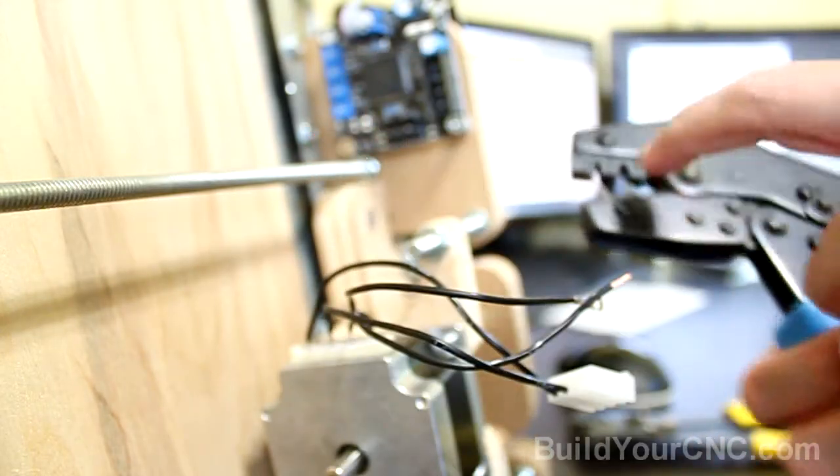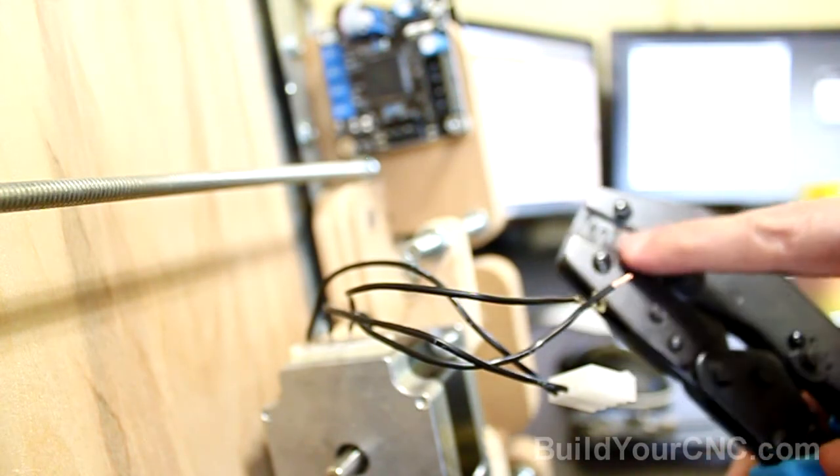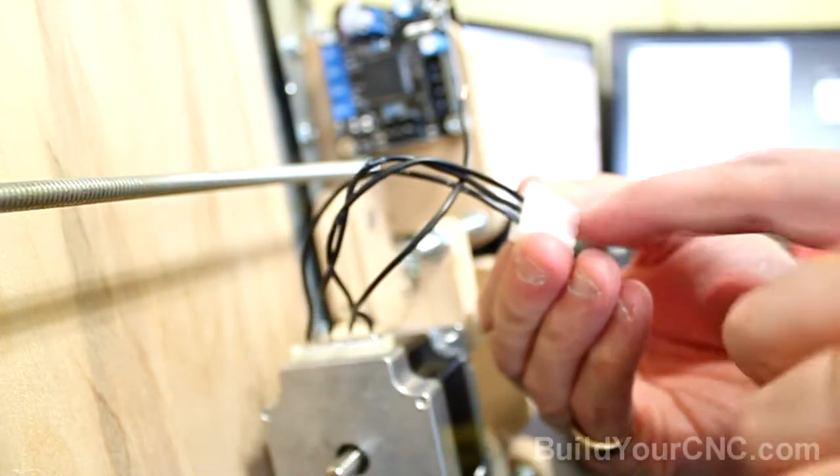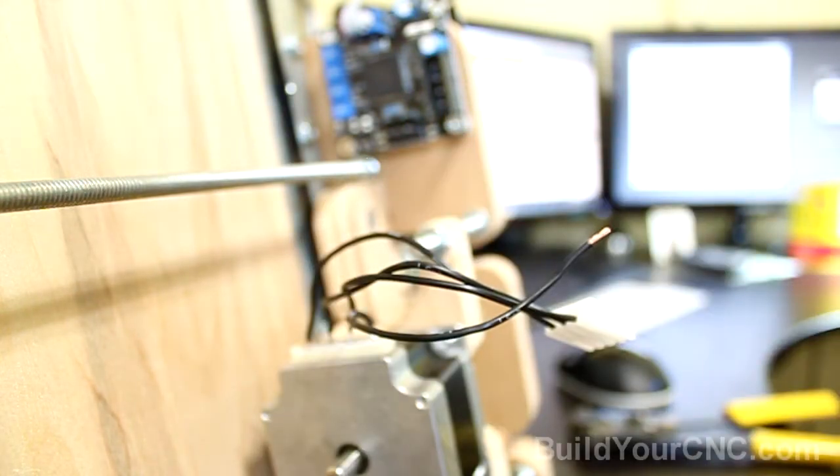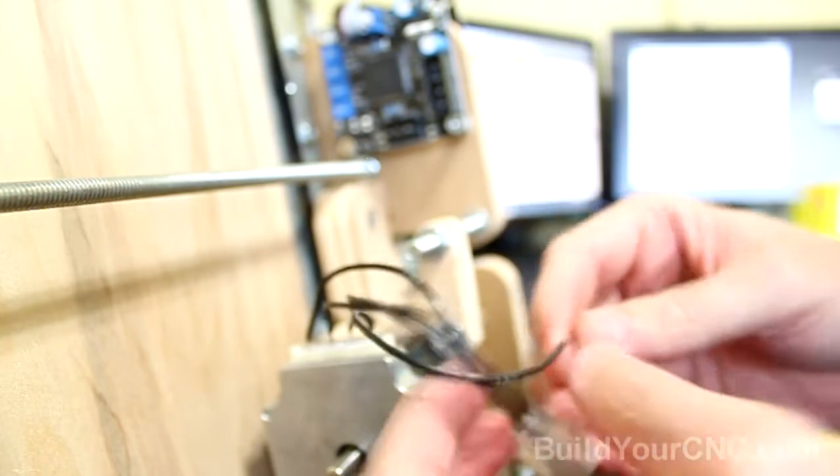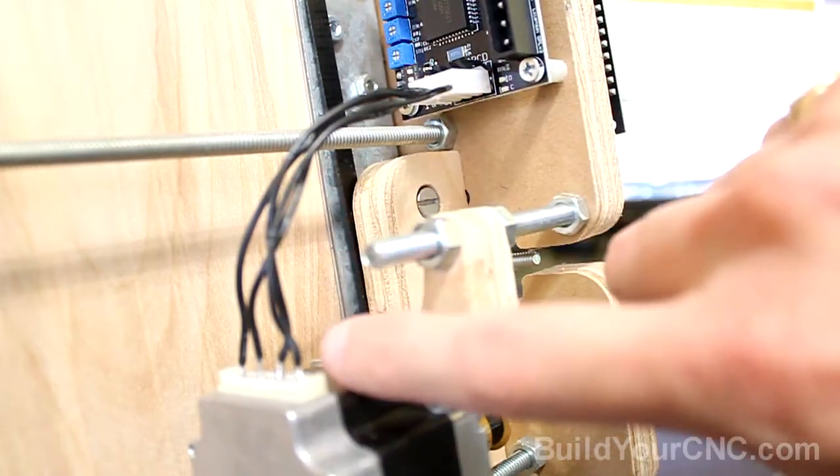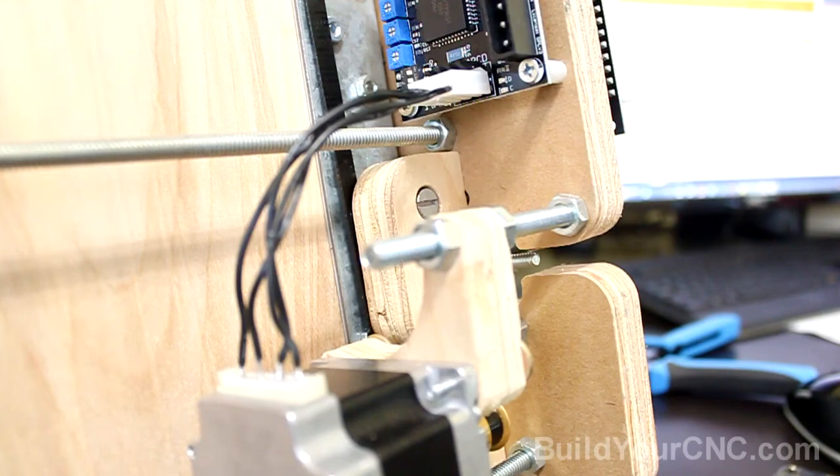I'm finding that I need to use 18 to 22 gauge and then the 24 to 30 gauge to be able to do it properly. It doesn't get enough pressure on this 18 to 22. If you ever need to take these out, you just have to push on this little pin and the wire will come out. And that can be plugged in and now we have a connection. Now we have a motor to the motor driver connection and we'll do the same thing for each of the other motors and drivers.